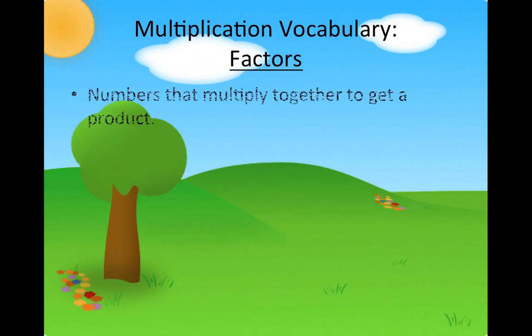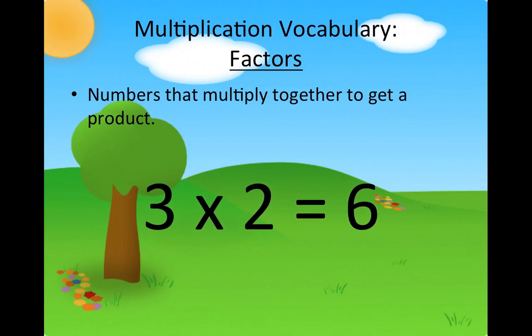Factors. Factors are numbers that multiply together to get a product. In the example 3 times 2 equals 6, 3 and 2 are the factors.